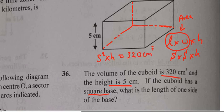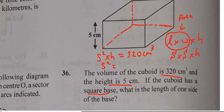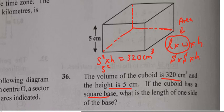Now we can replace the H. So S squared times the height. What's the height? The height is given to us as what? Five centimeters. So we can put that in.